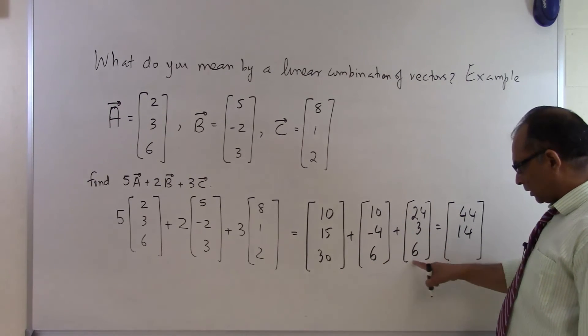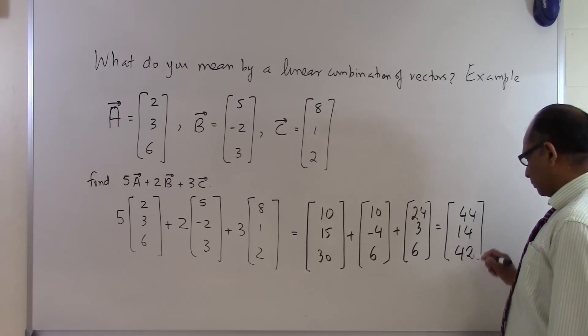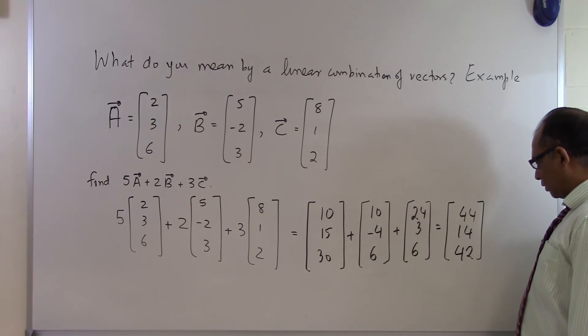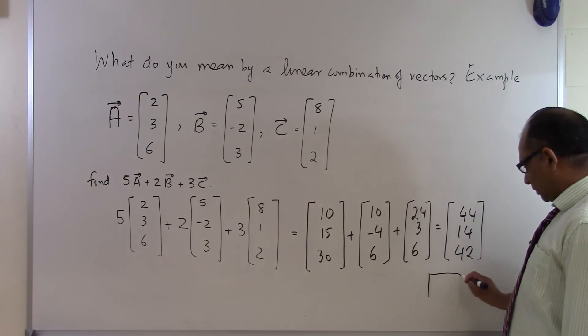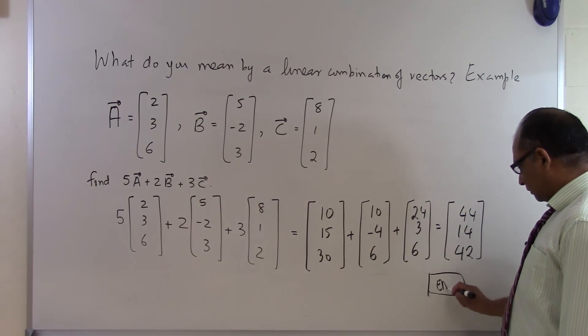30 plus 6 is 36, 36 plus 6 is 42. So that is your linear combination of those 3 vectors. And that's the end of this segment.